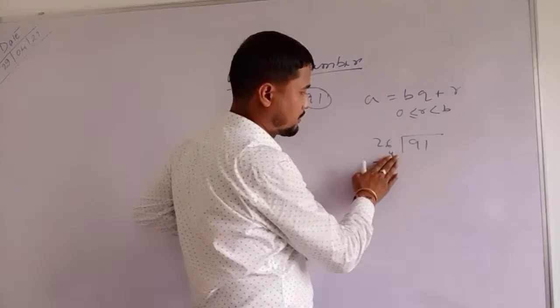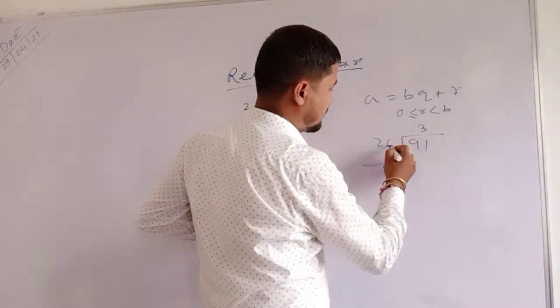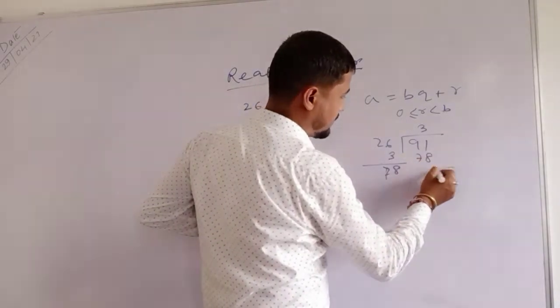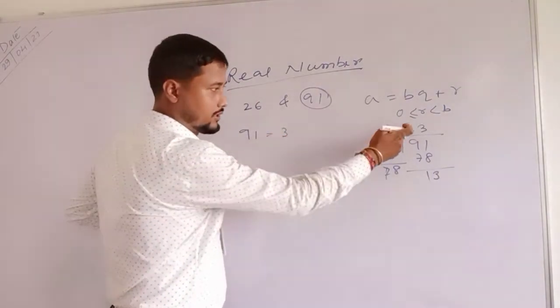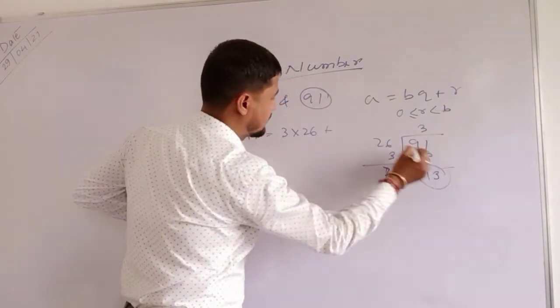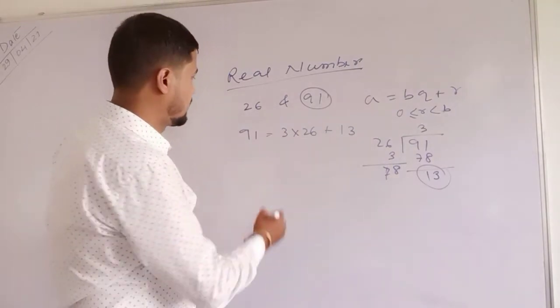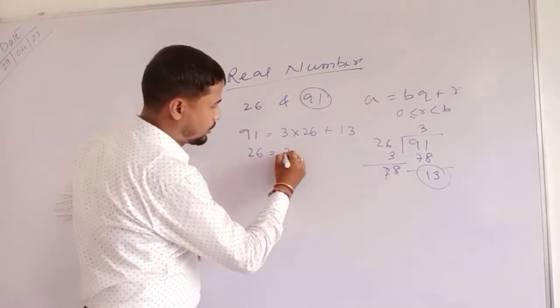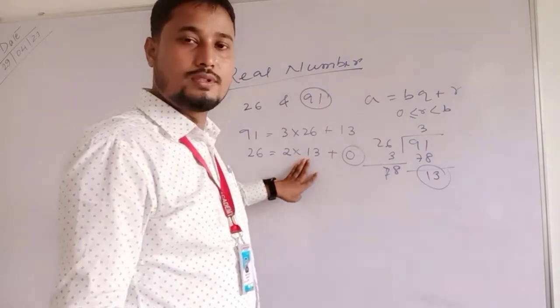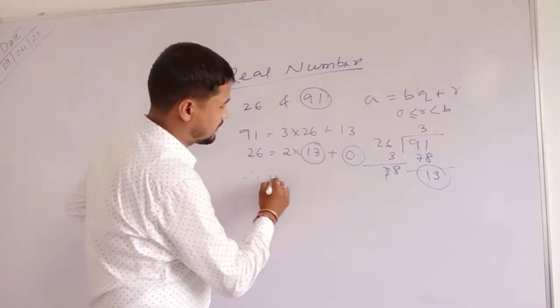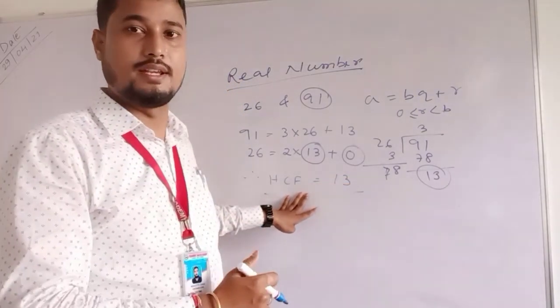Now which one is the greater number? 26. Then 26 divided by 13: 26 equals 13 into 2 plus 0. When the remainder is 0, the divisor 13 is the HCF. This is how you find HCF using Euclid's division algorithm.